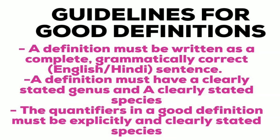A definition must be written as a complete and grammatically correct sentence. Whether in English or Hindi, it must be grammatically correct. A definition must have a clearly stated genus and clearly stated species - meaning its main category and its subcategories. Genus means the broader category it belongs to, and species means the parts within it.